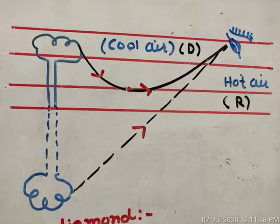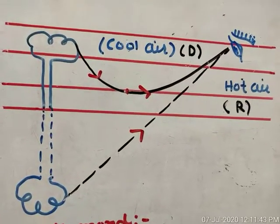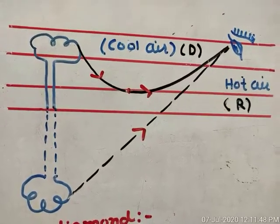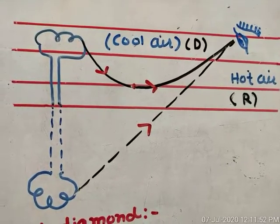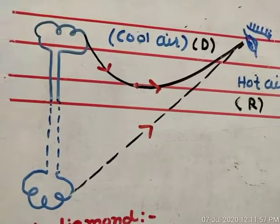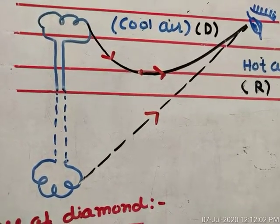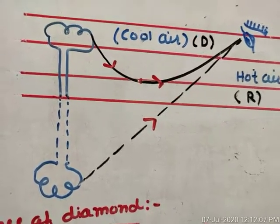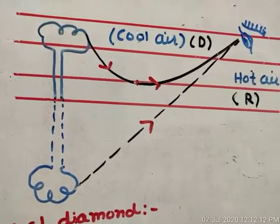In Hindi, this is also called 'मृग मरीचिका.' In ancient times in Arabian countries, people were punished by being left in the desert. Due to intense heat, they would be extremely thirsty, and from a distance they would see an inverted image of a tree or any object — that is the mirage phenomenon, called मृग मरीचिका in Hindi.